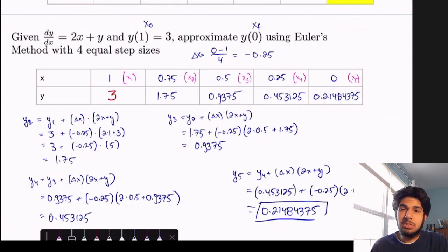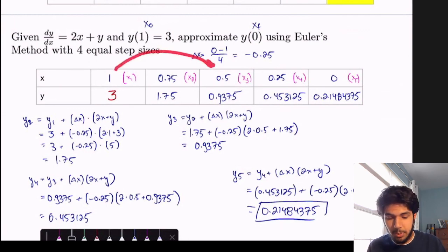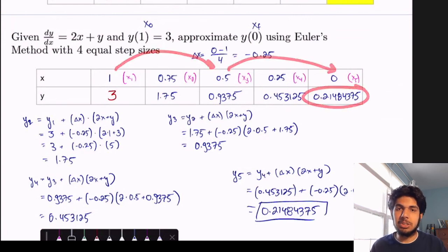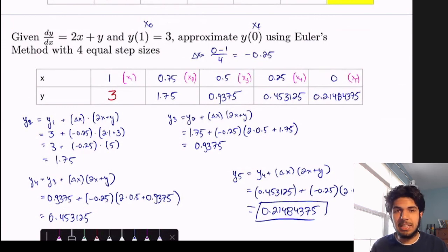So an interesting thing to note about Euler's method is the more steps you have, the closer your approximation will be to the correct answer. If you have less step sizes, then your approximation will be a little bit worse. And perhaps it would be interesting to try this with only two equal step sizes. So going from 1 to 0.5 and 0.5 to 0, and see if this approximation is better or worse than with two step sizes.